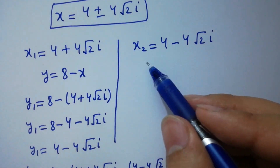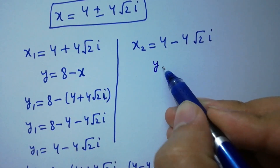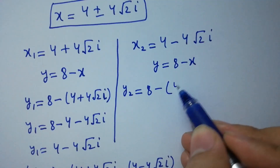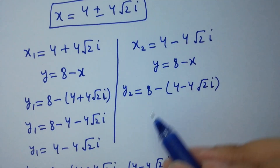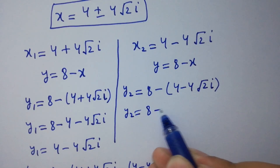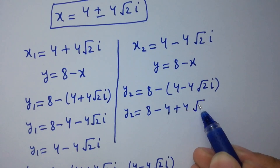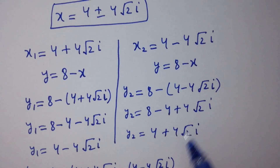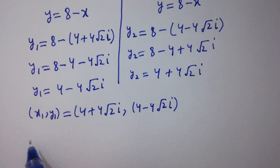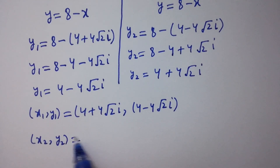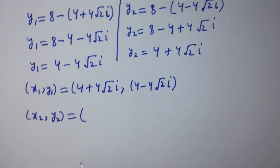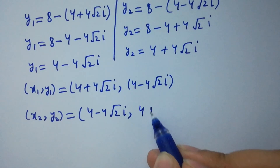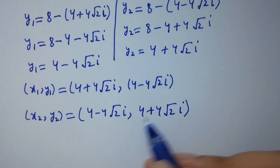Similarly, for x2 equal to 4 minus 4 square root of 2i, using y equal to 8 minus x: y2 equal to 8 minus (4 minus 4 square root of 2i), giving y2 equal to 8 minus 4 plus 4 square root of 2i, so y2 equal to 4 plus 4 square root of 2i. Therefore x2 and y2 equal to 4 minus 4 square root of 2i and 4 plus 4 square root of 2i respectively.